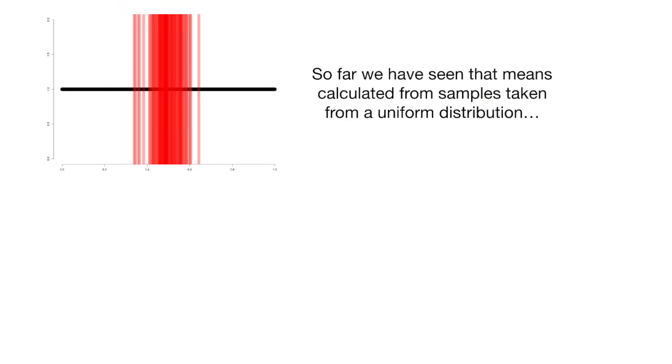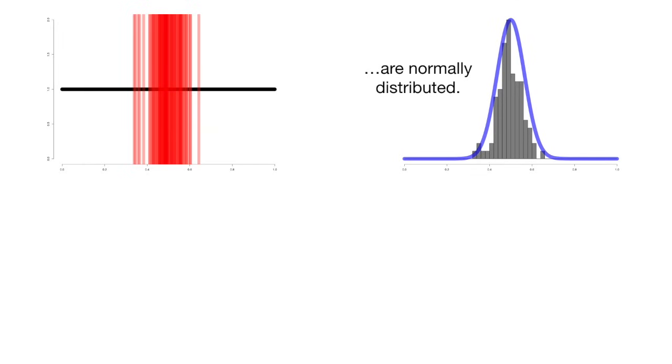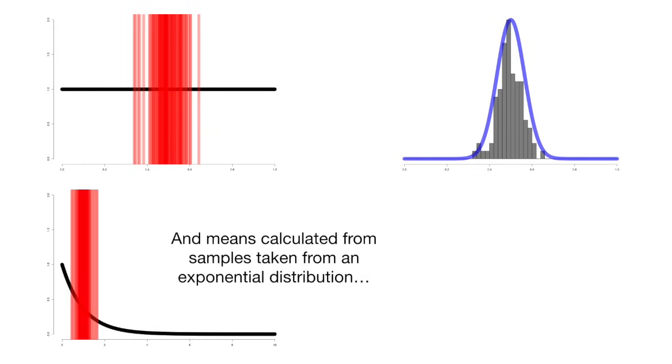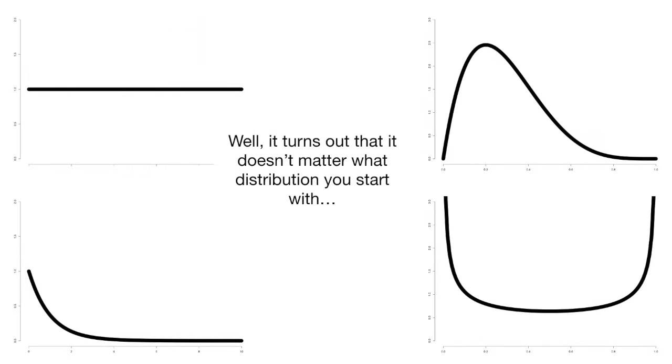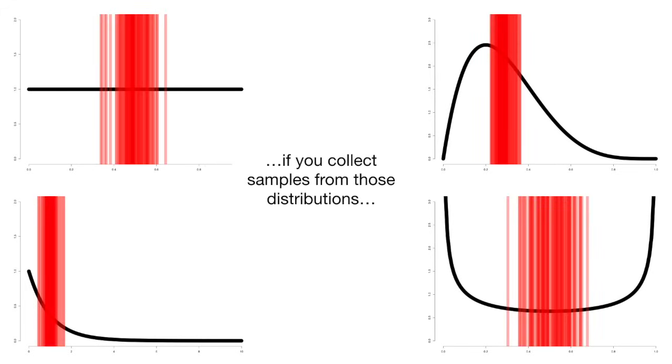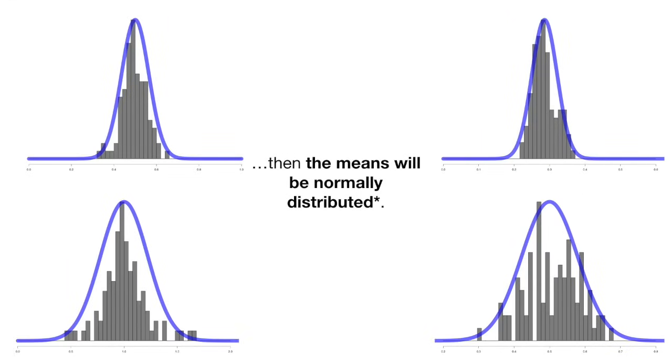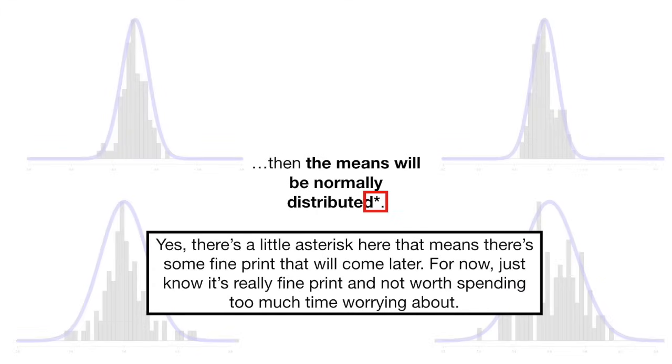So far, we have seen that the means calculated from samples taken from a uniform distribution are normally distributed. And means calculated from samples taken from an exponential distribution are also normally distributed. Well, it turns out that it doesn't matter what distribution you start with. If you collect samples from those distributions, the means will be normally distributed. Yes, there's a little asterisk here that means there's some fine print that will come later. For now, just know it's really fine print and not worth spending too much time worrying about. Double bam!